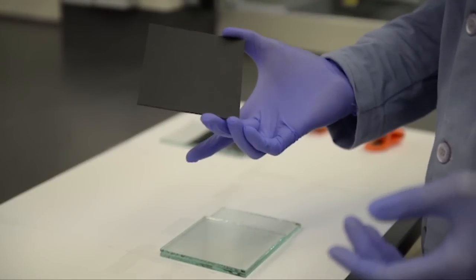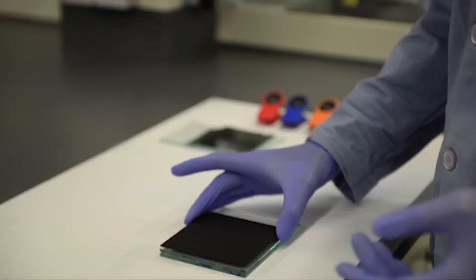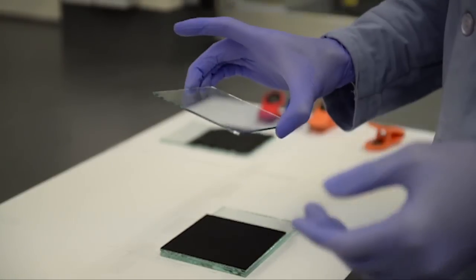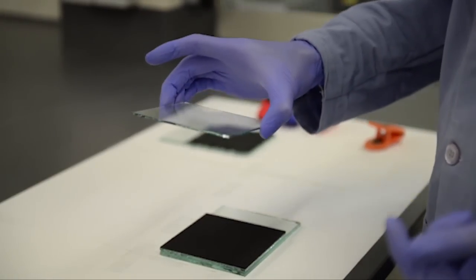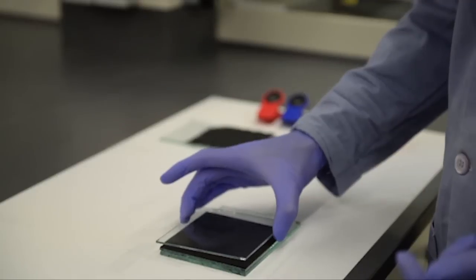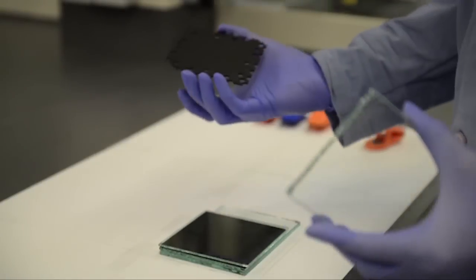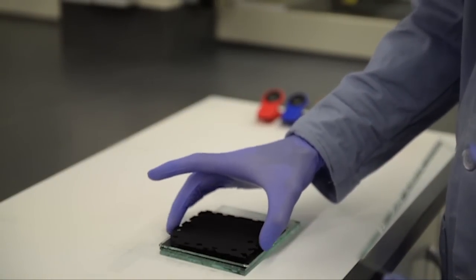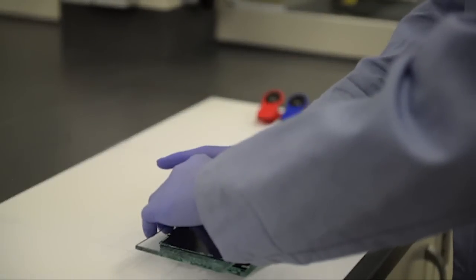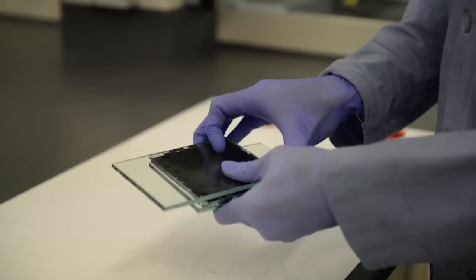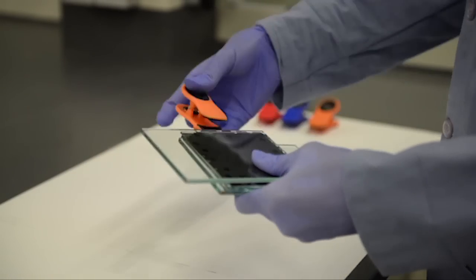Then we coat the surface with perovskite light-absorbing material followed by a layer of copper thiocyanate. To complete the device, we sprinkle carbon particles on the layer and close it with another piece of FTO glass with the conductive side facing down. We use binder clips to hold the device together.